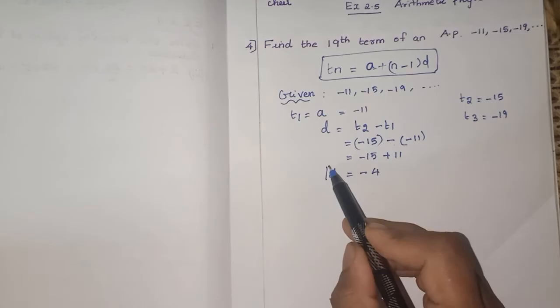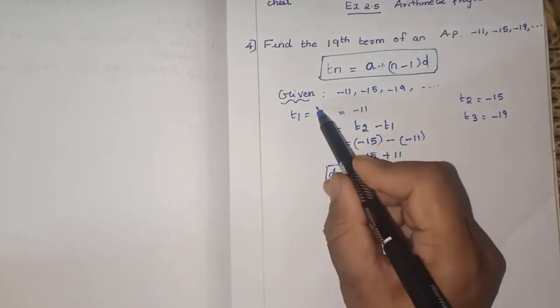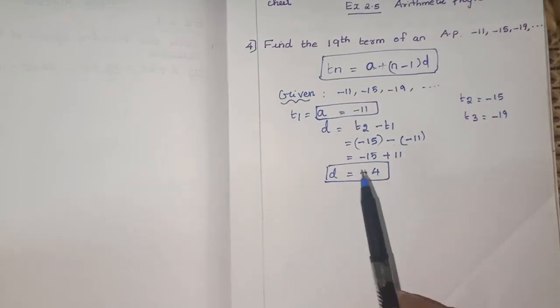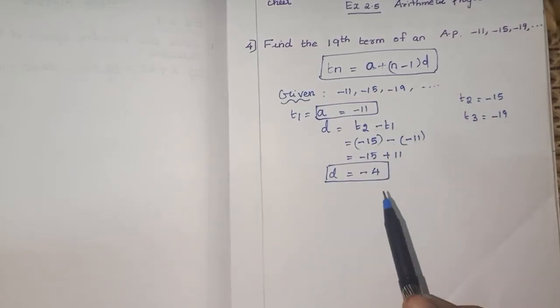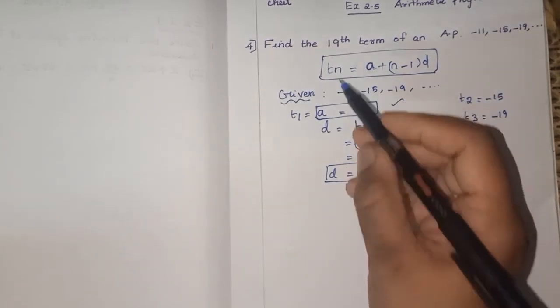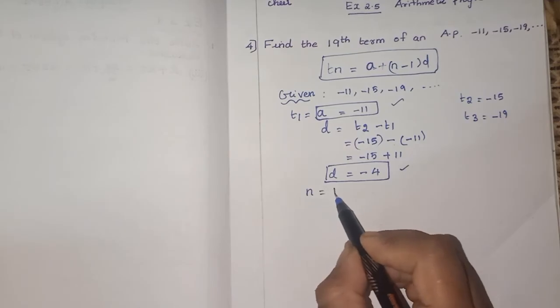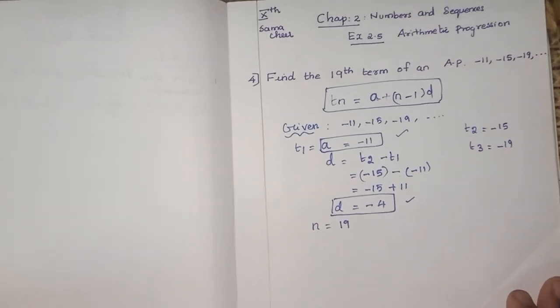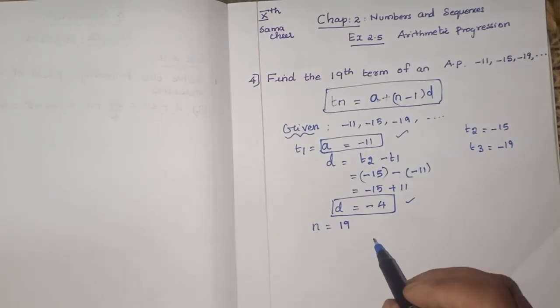So D is minus 4. So we found A from the sequence and we found D, that is T2 minus T1. So both are found. Now you can apply it in the formula. TN formula. So the N becomes, what is N?